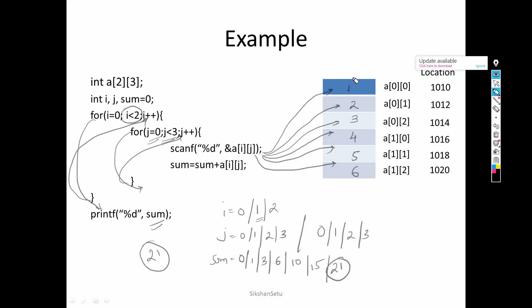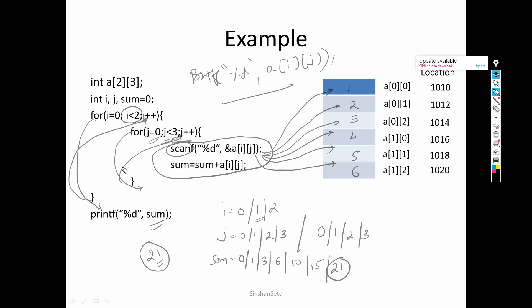So by using this way, we have scanned values of two rows and three columns — a total of six values — and computed their sum. If you want to print the value, the format remains the same: i equals zero, i less than two, i plus plus; j equals zero, j less than three, j plus plus. In place of scanf, write printf with percentage d and a of i j. Or if you want to manipulate the cell values, the same two for loop format applies and whatever logic you need can be written within the inner for loop, applicable for each cell.